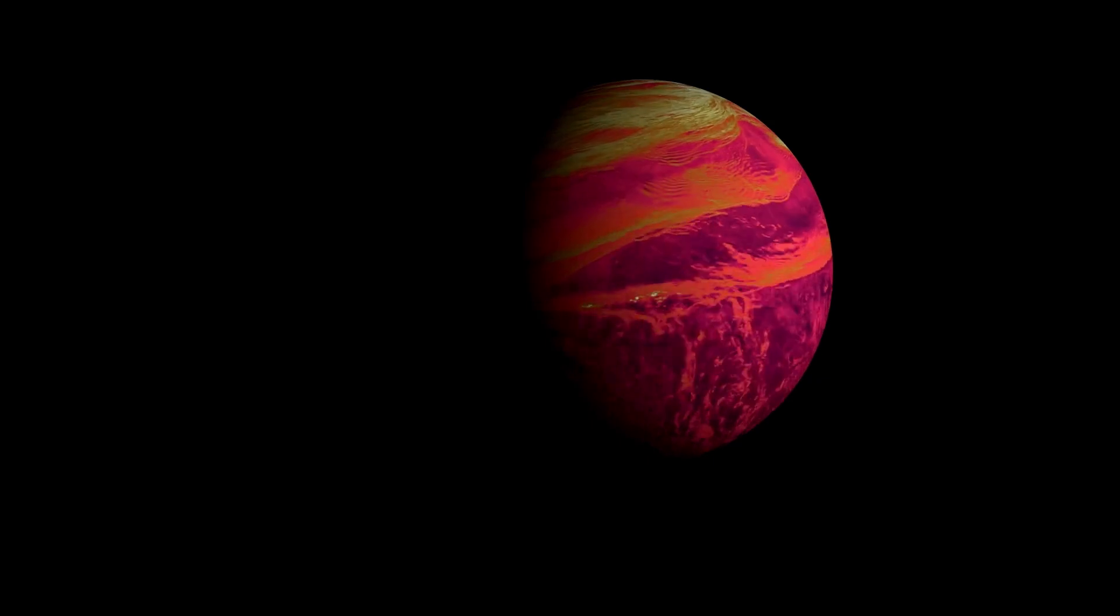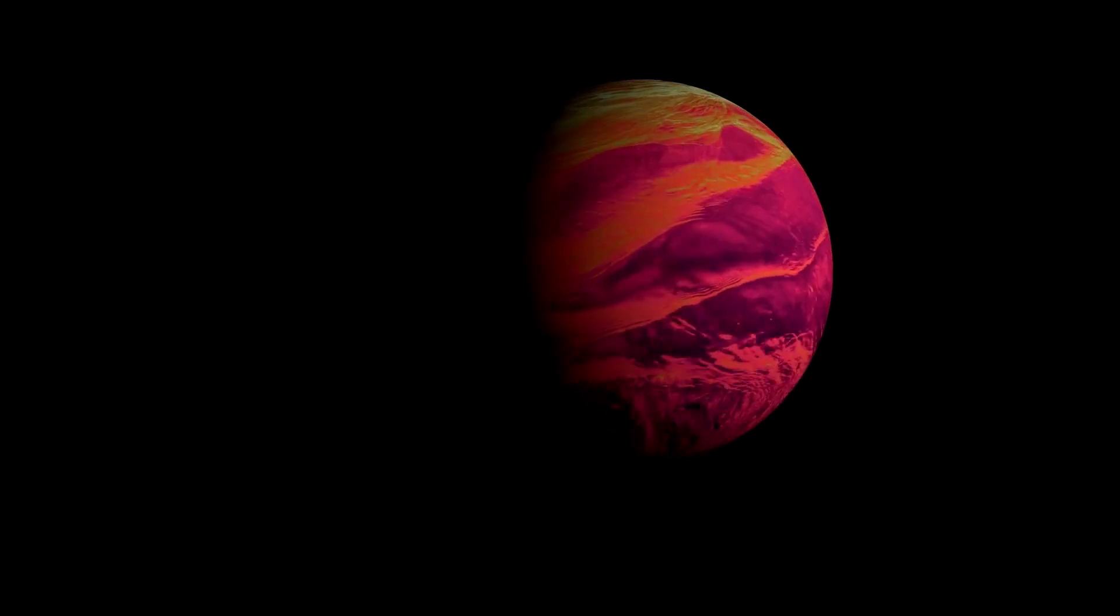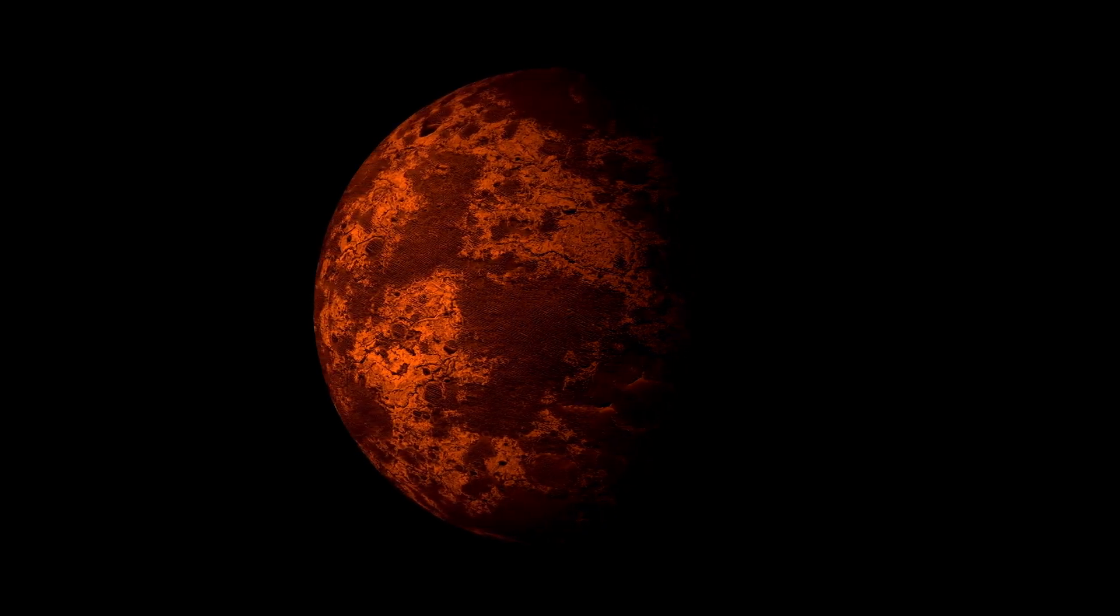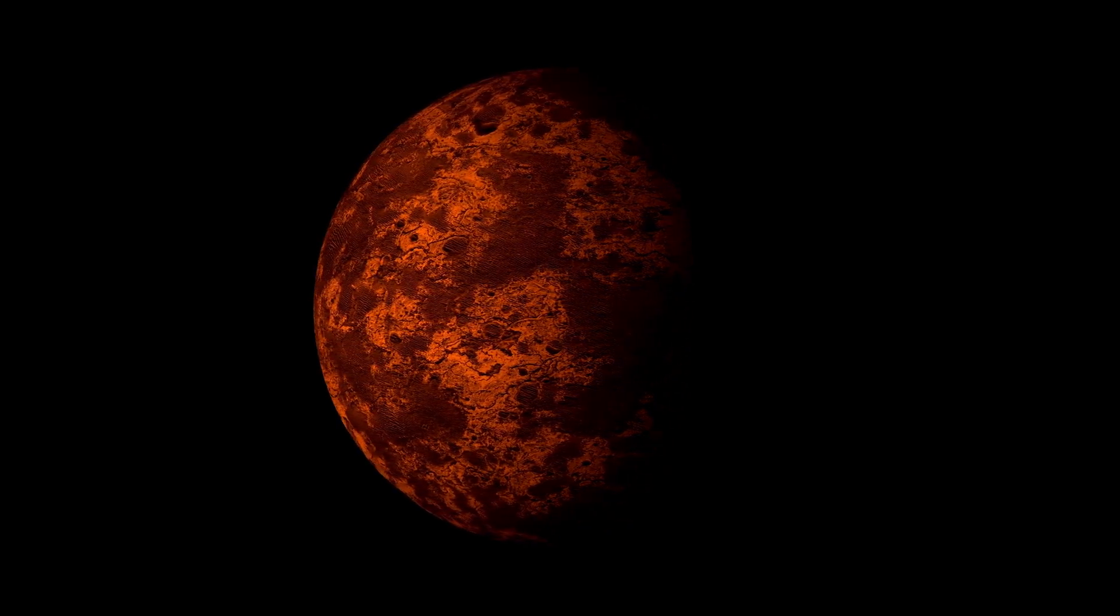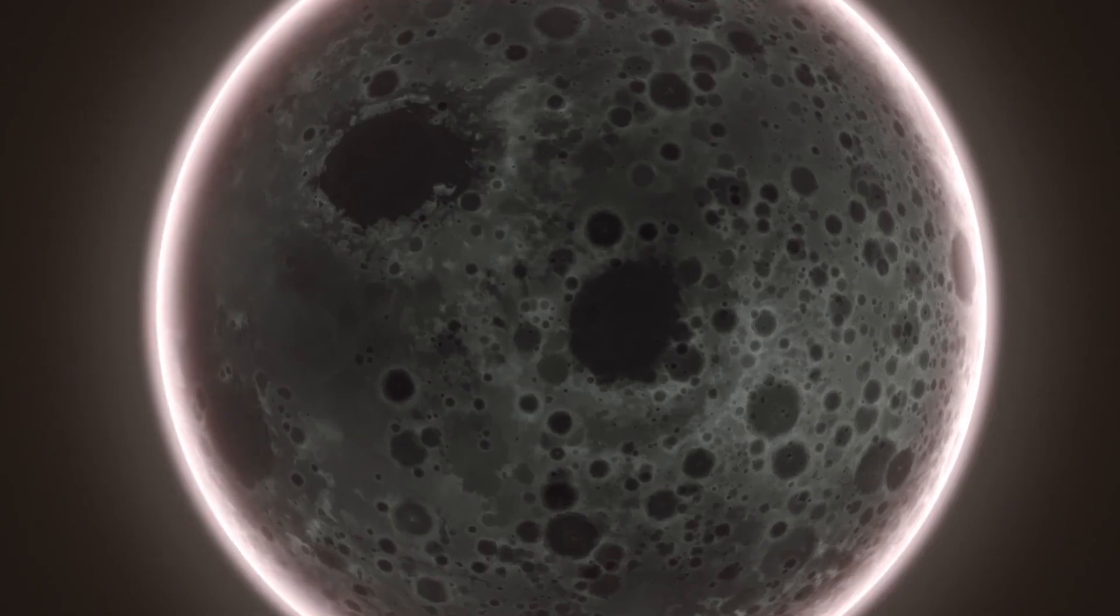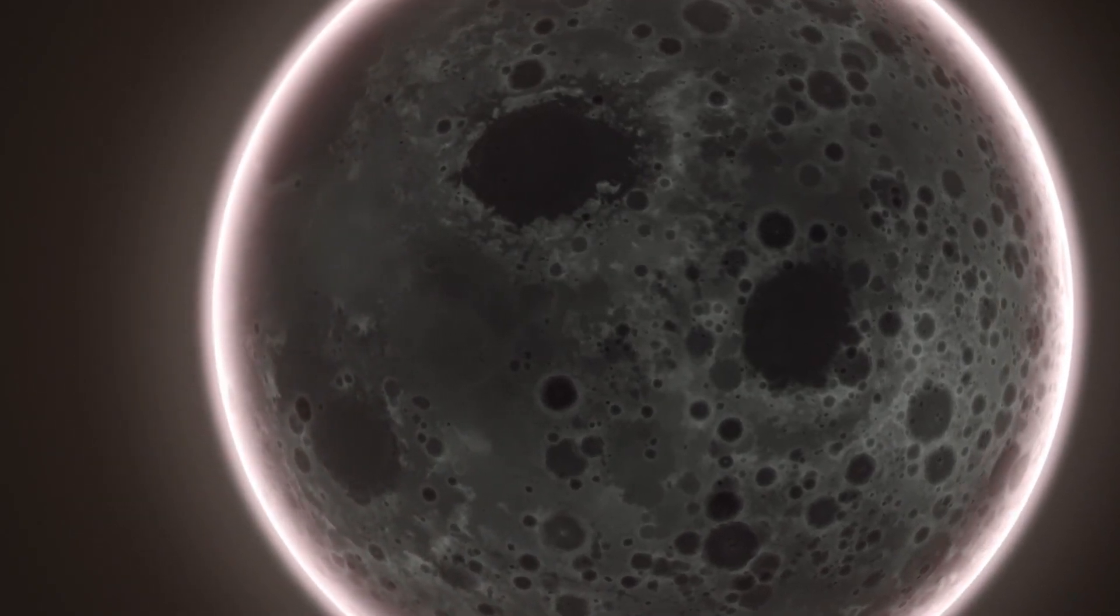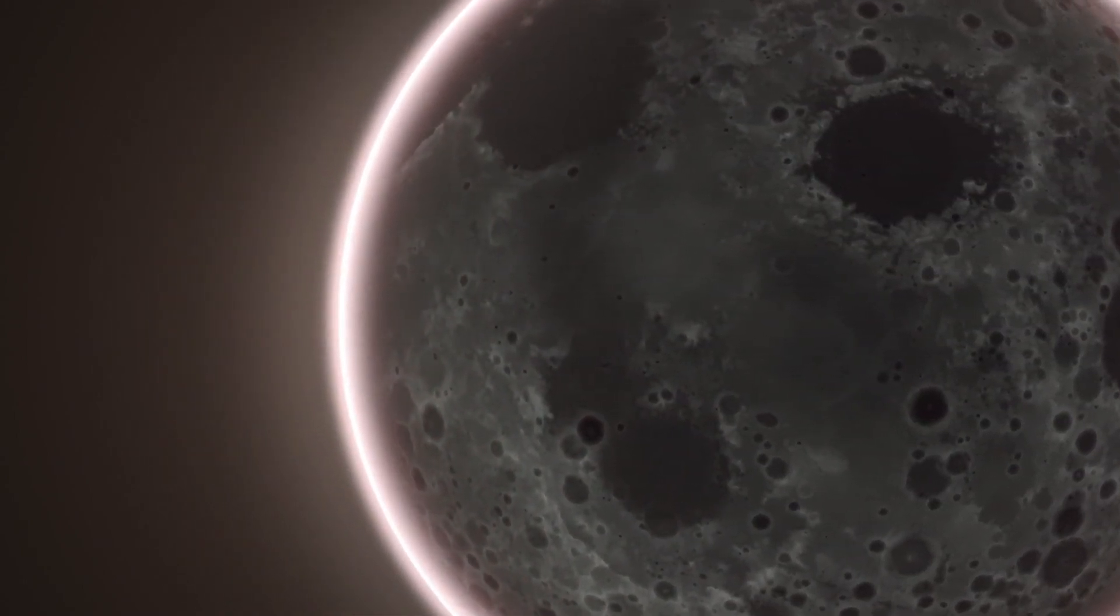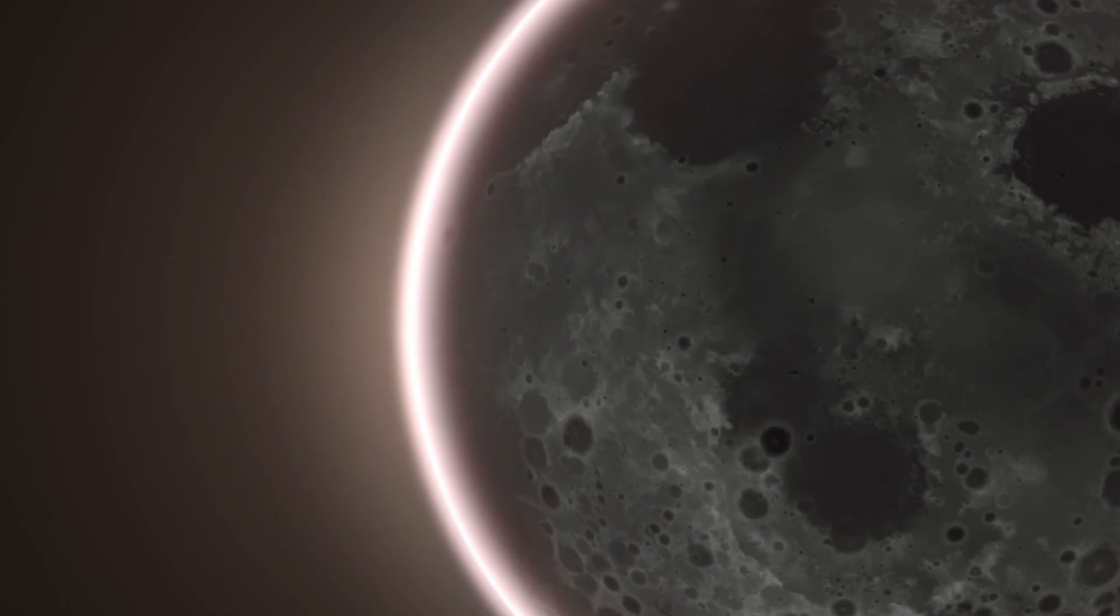Charon is so large relative to Pluto that they are sometimes referred to as a double system. The gravitational interaction between the two bodies results in a synchronized rotation, meaning that Pluto and Charon always show the same face to each other. This unique relationship influences the orbital dynamics and may play a role in the potential geological processes on both bodies.